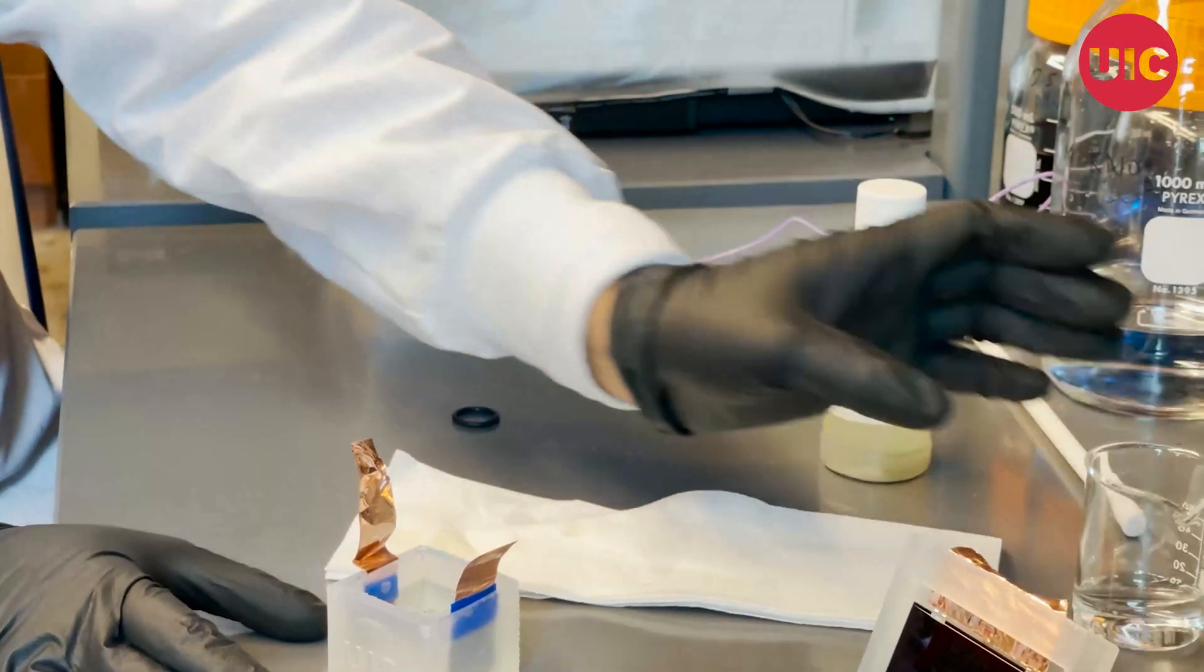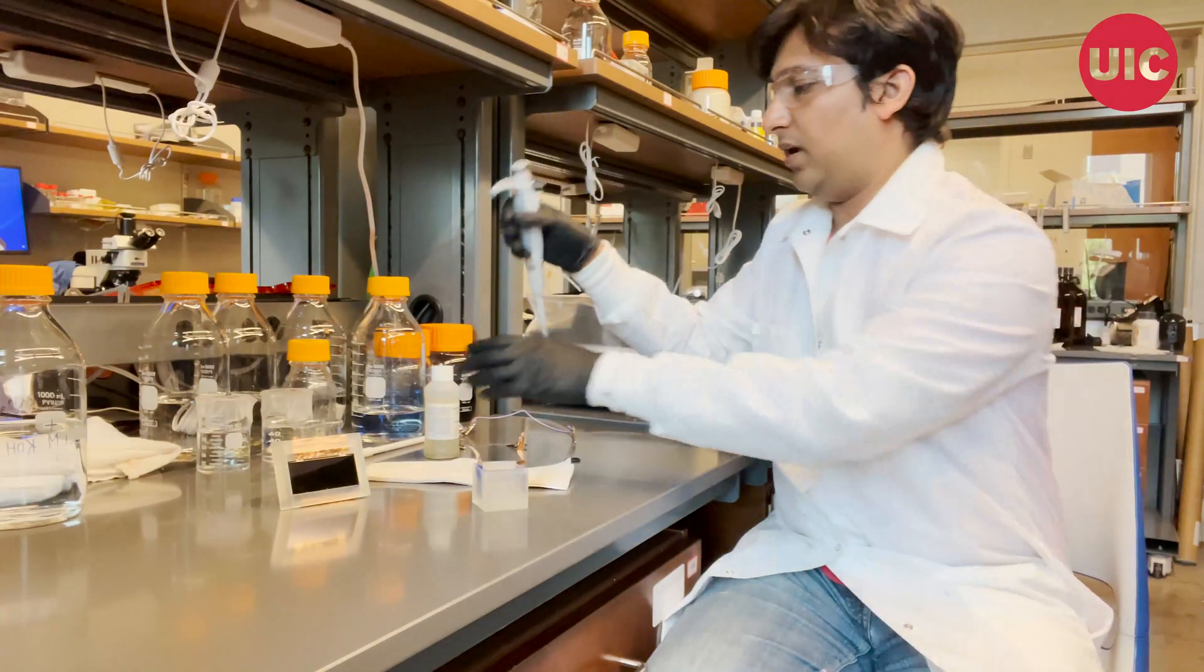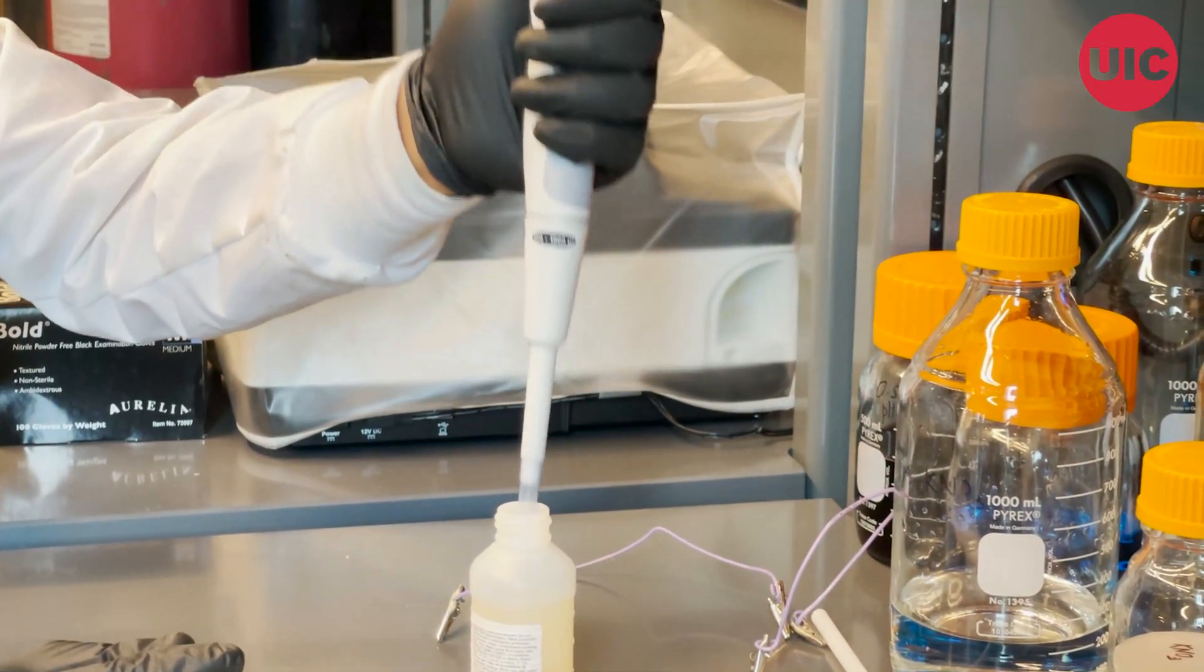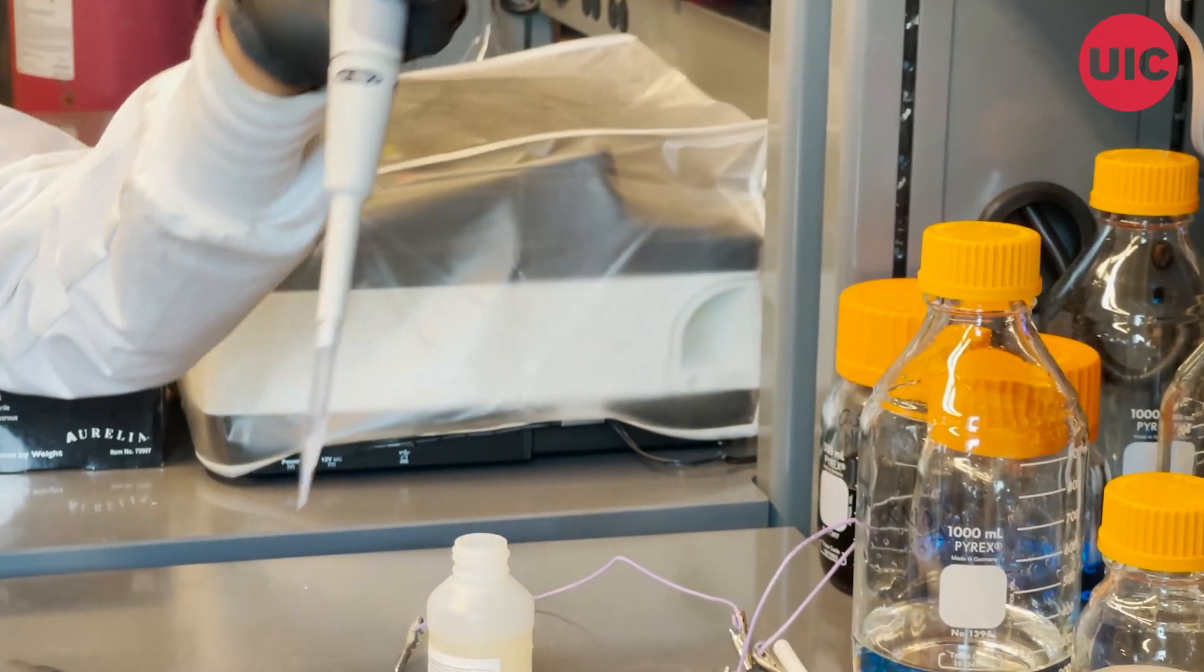Once the electrolyte is filled, we'll add 500 microliters of Nessler's reagent, which will help us in detecting the presence of ammonia.